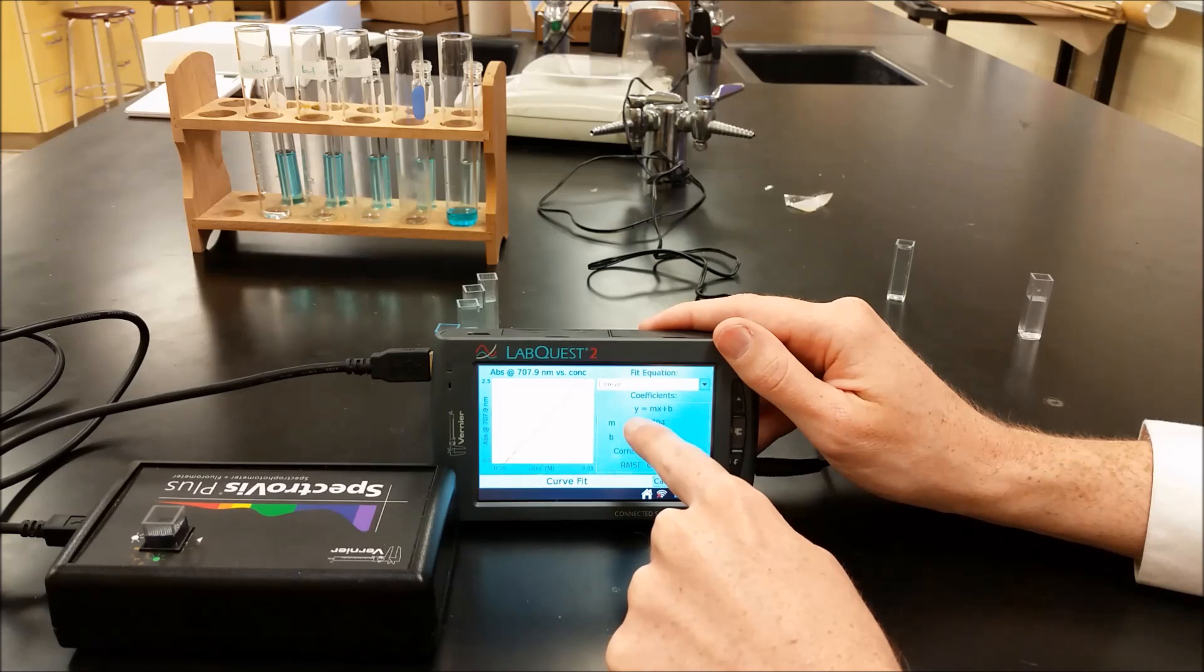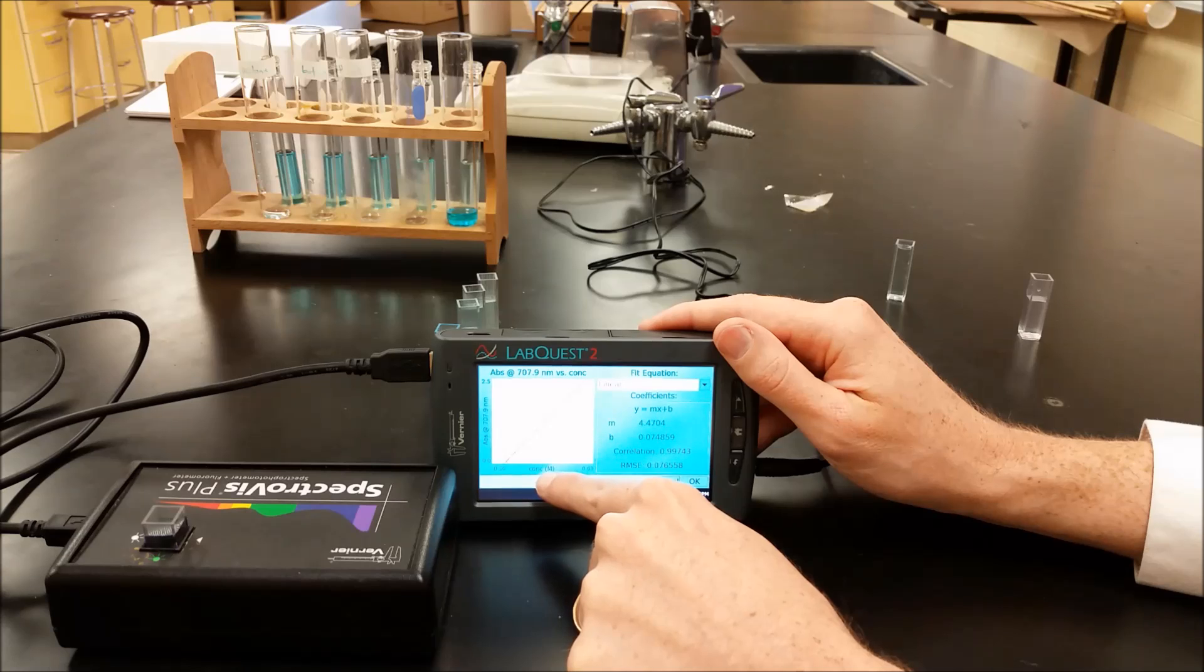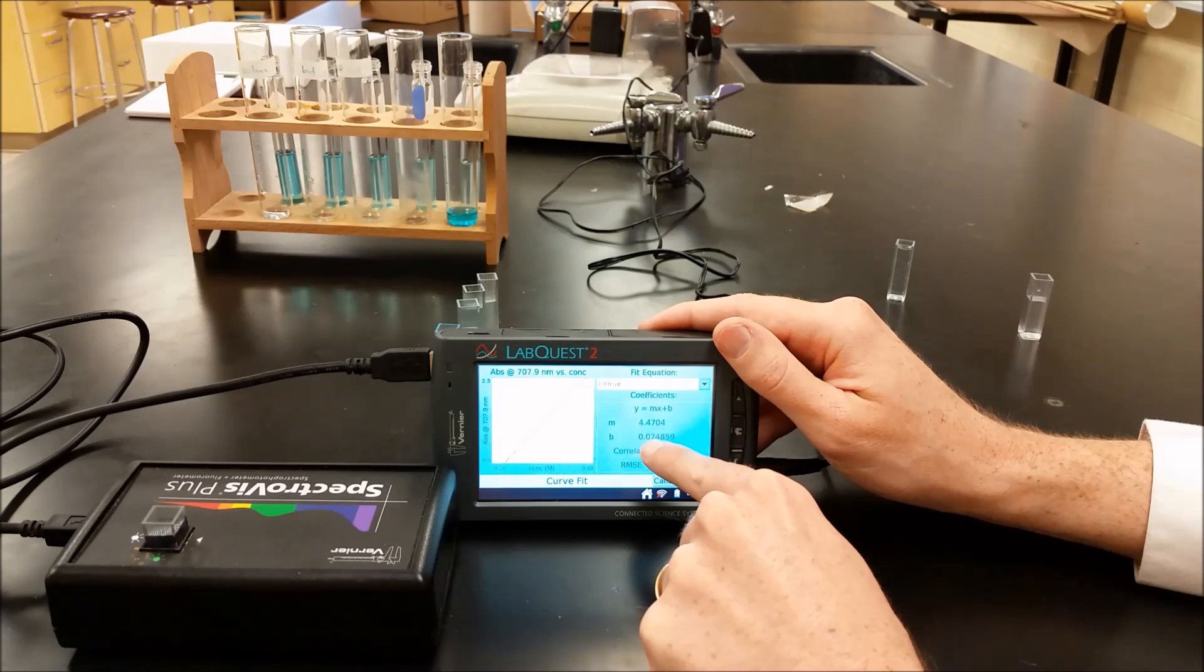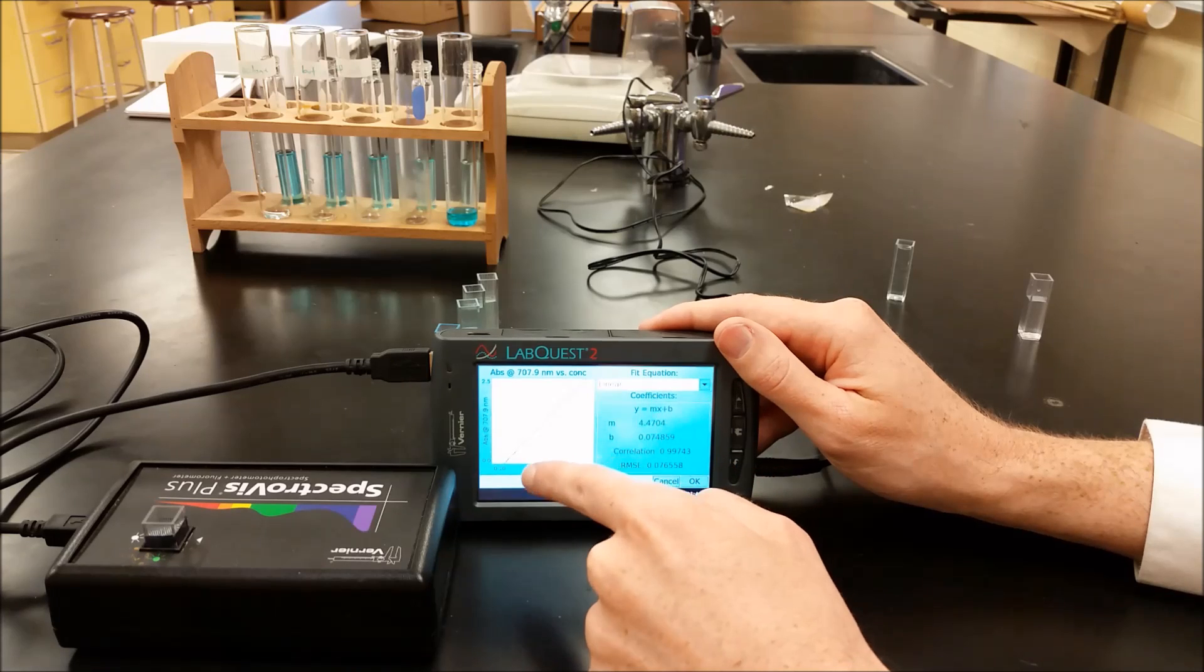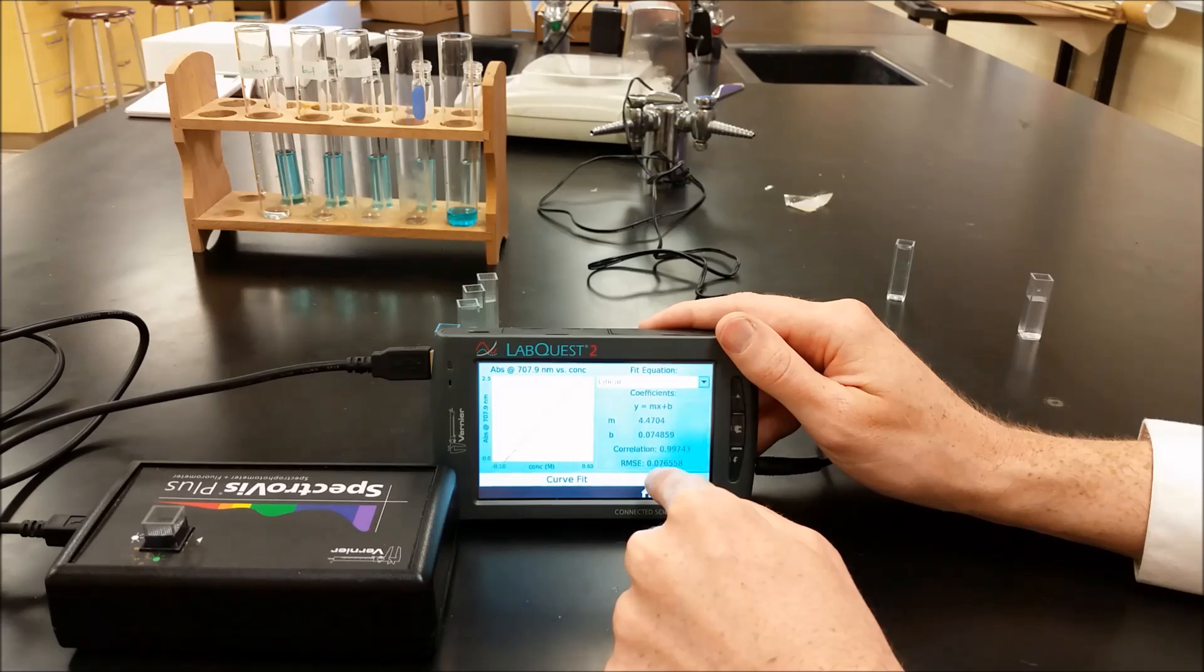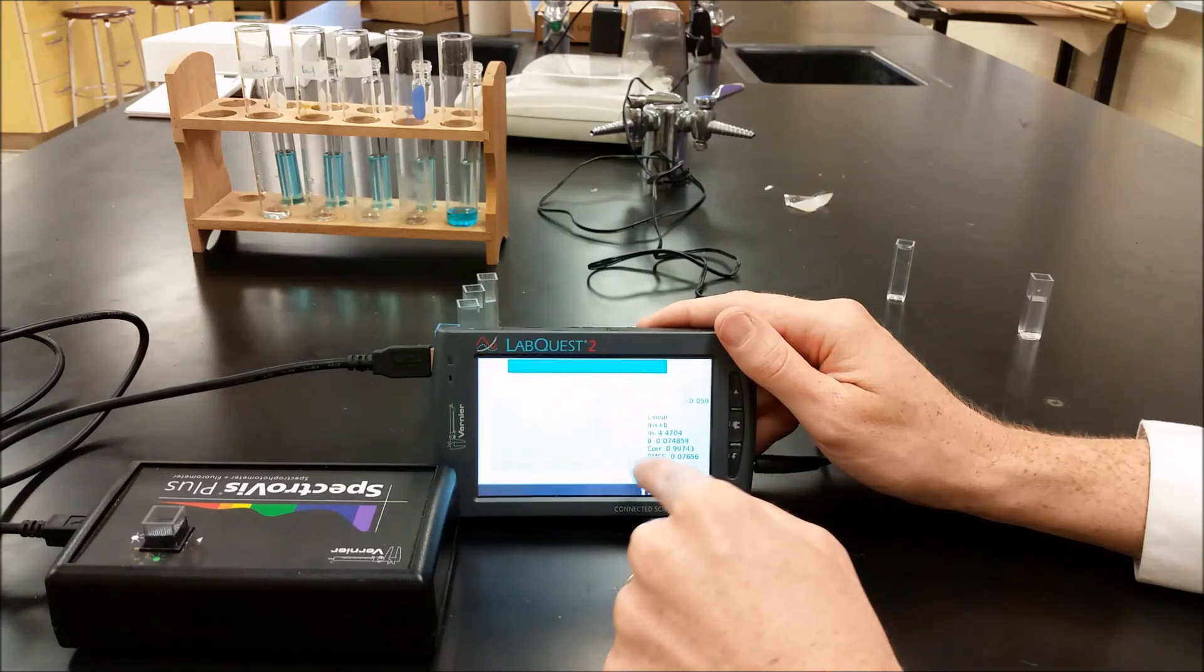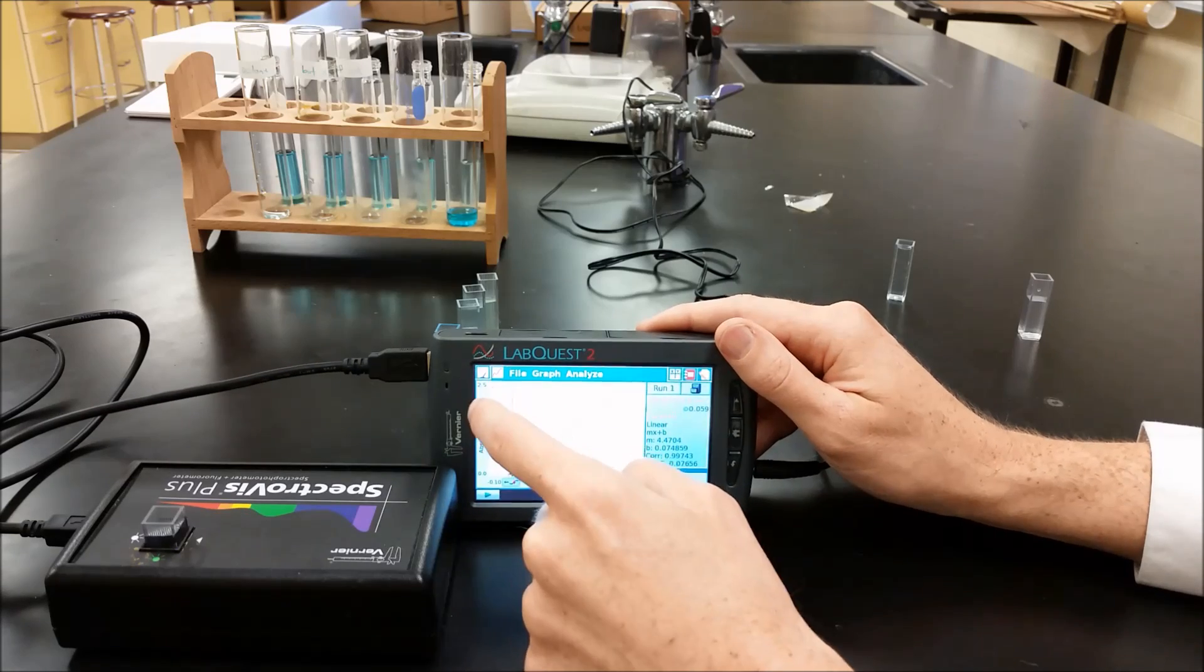So we get Y, which is the absorbance, is equal to 4.4704 times the concentration plus 0.074859. We know that it should be 0. So we should have a Y intercept of 0. That's not too far off from it. So we can go ahead and take that equation. And then the other thing we can do is we can go back to the meter here now.